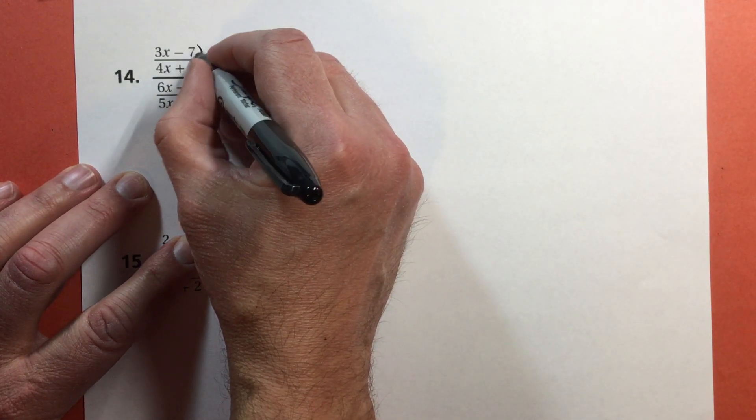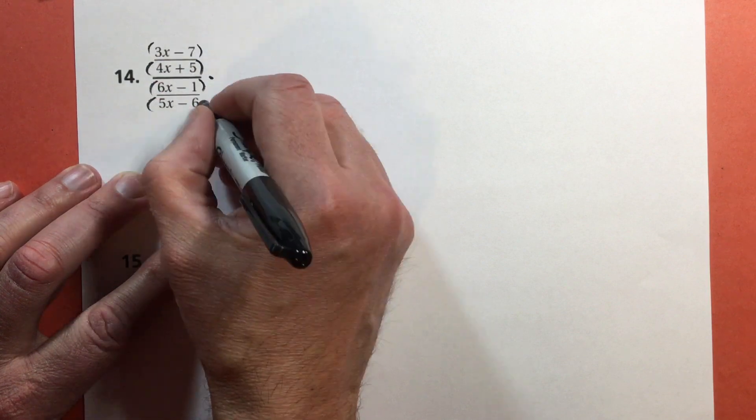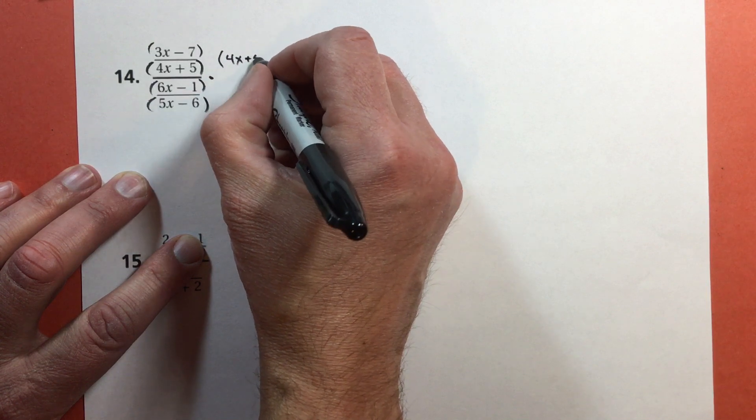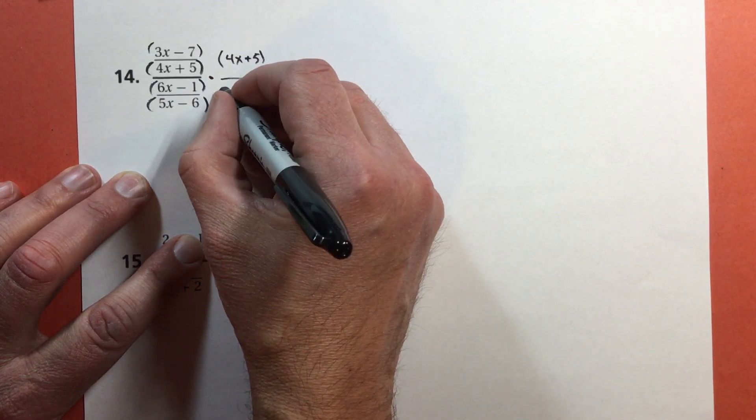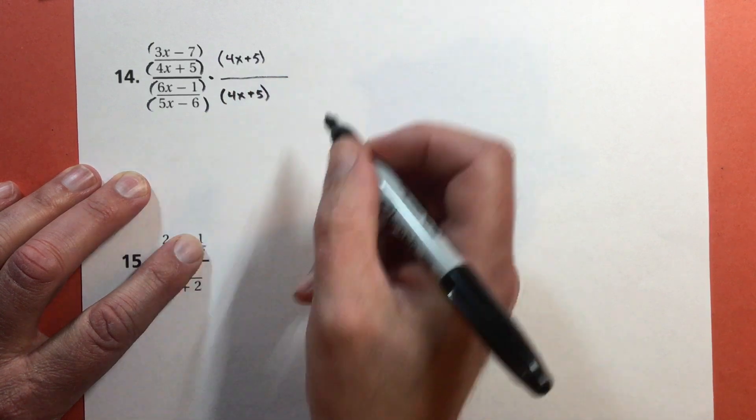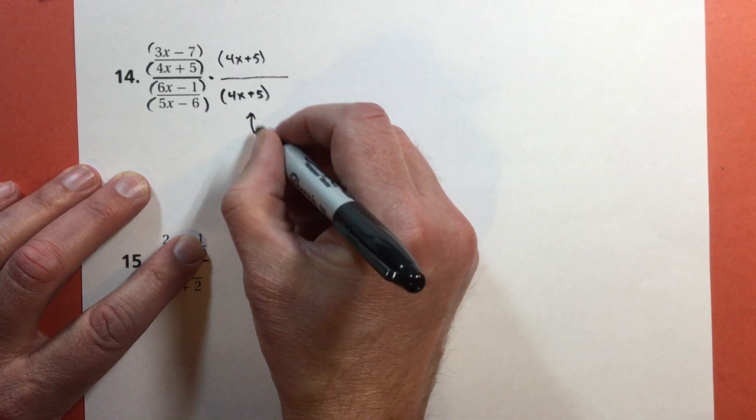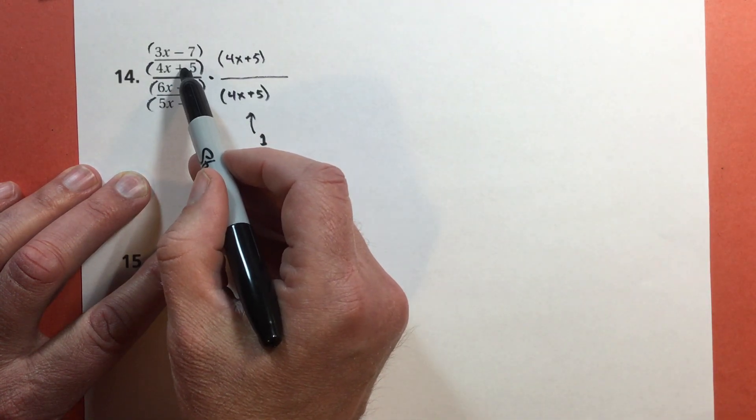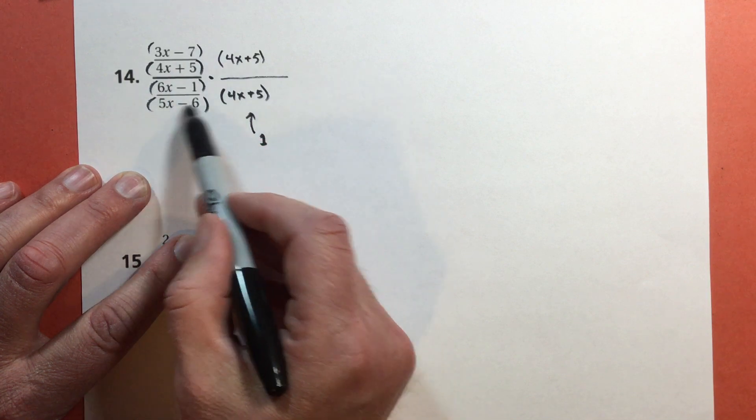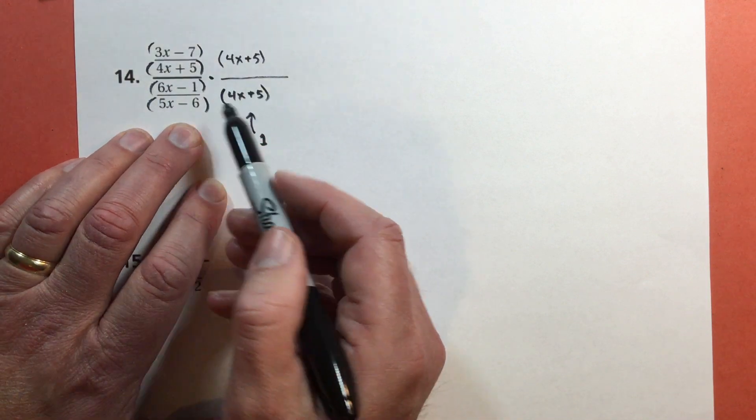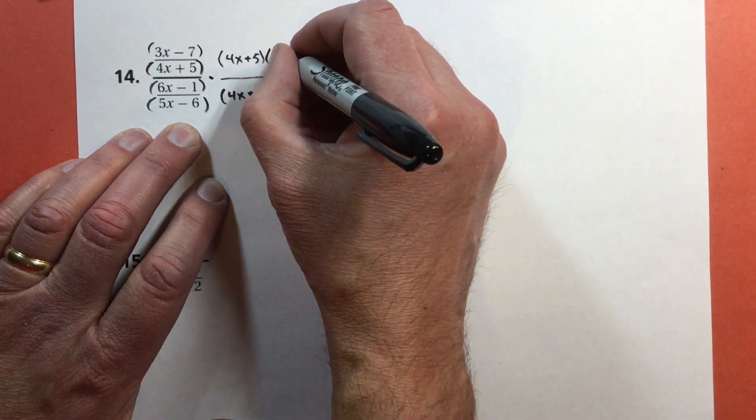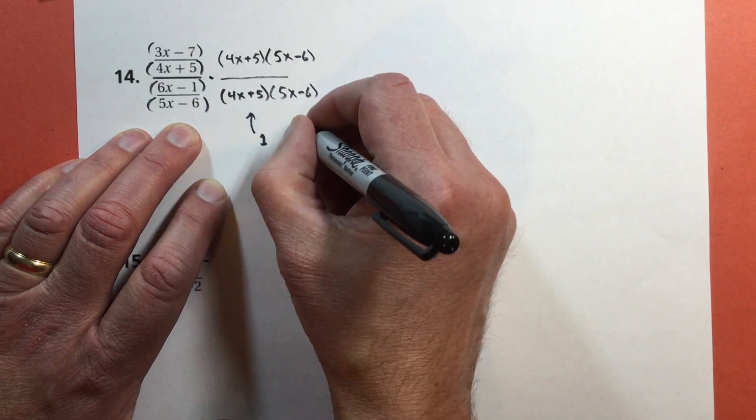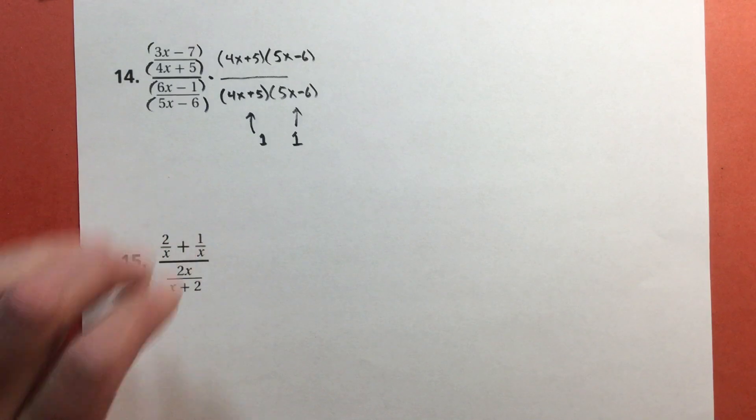I'm going to multiply by 4x plus 5, and down here, same thing, 4x plus 5. 4x plus 5 over 4x plus 5 is just going to give me the number 1. That's going to get rid of this, so I don't have any more fractions in the top part, but it's not going to get rid of this. So I also have to multiply by 5x subtract 6. This is also just the number 1.